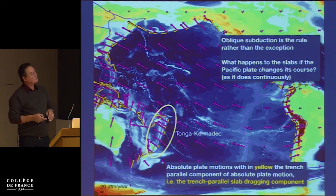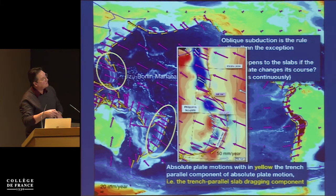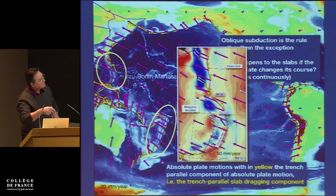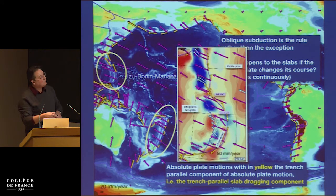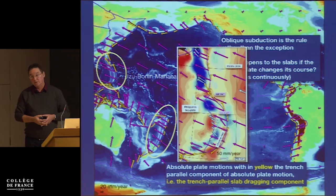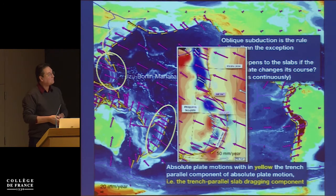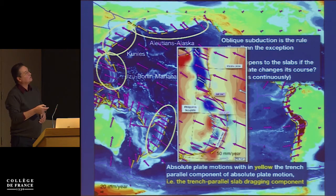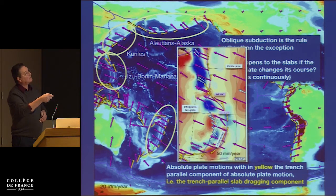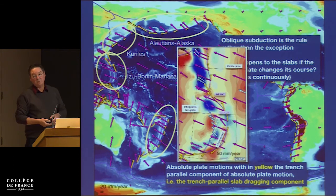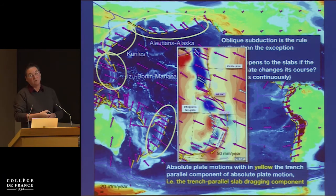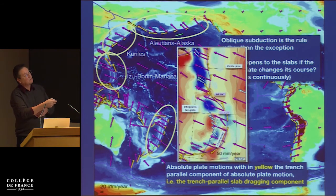For the Izu-Bonin system: the tomography shows the Mariana slab and Philippine Sea plate, with the Pacific plate at Izu-Bonin. Absolute plate motion is trench-perpendicular in the Marianas, but going along the Izu-Bonin arc, the trench-parallel component increases and even exceeds the subduction component — something significant is happening there. In Alaska, the Pacific plate subducts trench-perpendicular, but going along the Aleutians, the motion becomes completely trench-parallel at the far end. A slab there of 200–250 kilometers cannot have subducted in place; it must have been transported from the east.